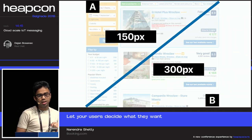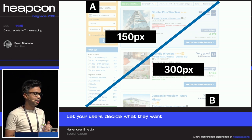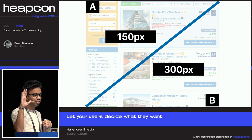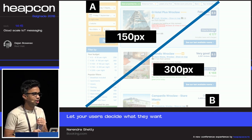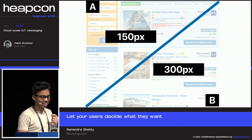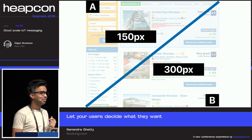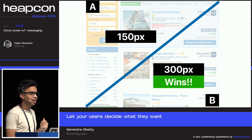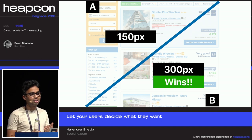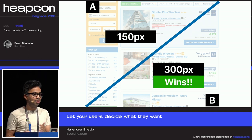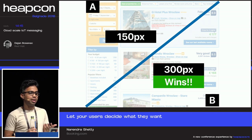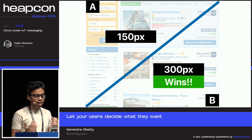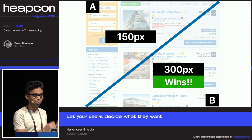So we ran the experiment again with 150 pixels versus 300 pixels. The 300-pixel variant did better. The hypothesis got stronger on the second run because we understood how users and the product were behaving. This is why secondary metrics are very important — they help you understand what else changes when you make small changes like this.